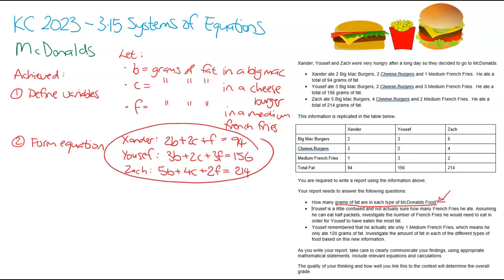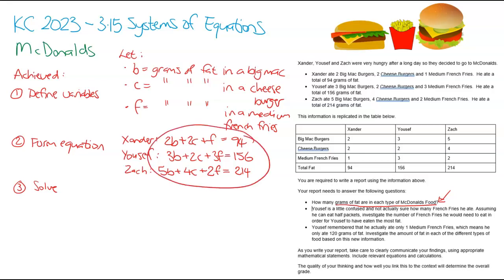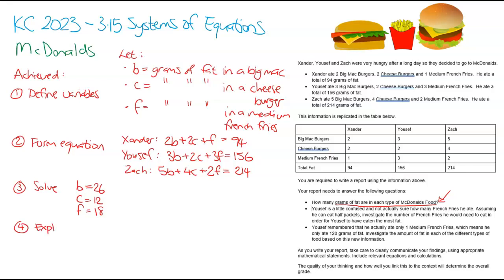Once you've formed your equations, the third step is to solve those equations. This is where your graphics calculator or other online solving tool will come into play. I won't bore you by entering all the data. If I entered these equations in my graphics calculator, I was told that B equals 26, C equals 12, and F equals 18. So I've now solved it.